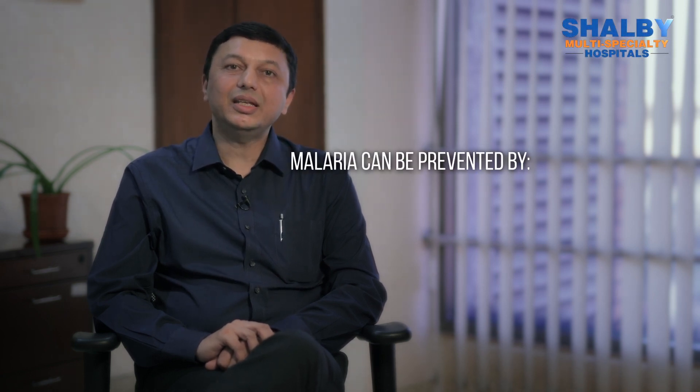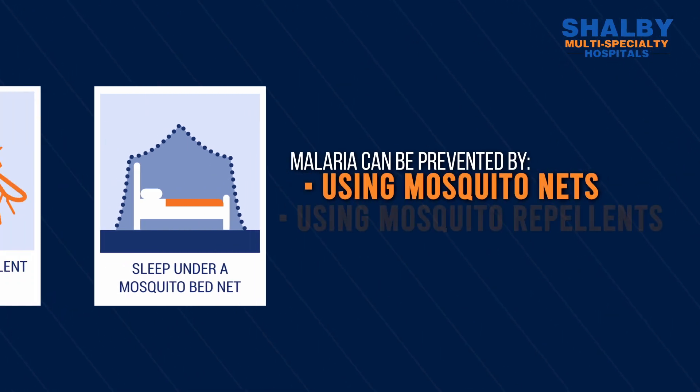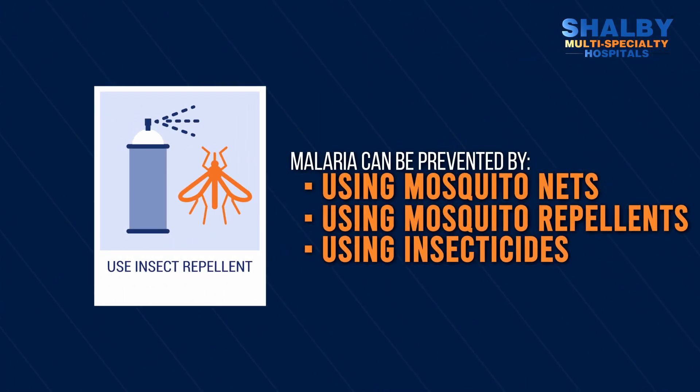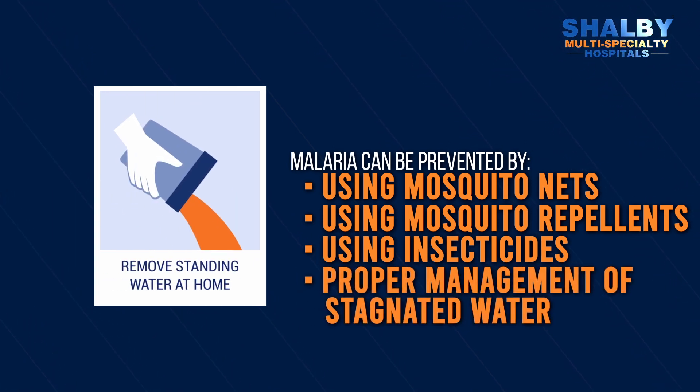The most common way to prevent malaria is by preventing the mosquito bite. This can be done through the use of mosquito nets, repellents, spreading insecticides, and proper management of stagnant water, which is important in preventing breeding sites for mosquitoes.